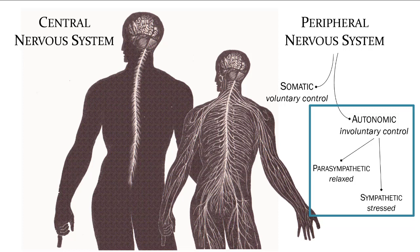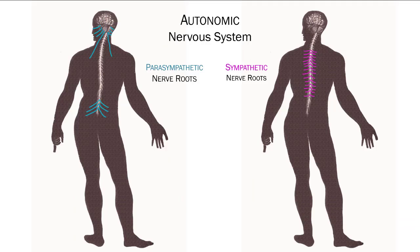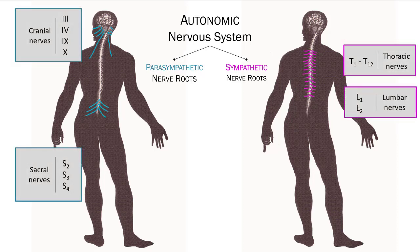We will be covering these two portions of the autonomic nervous system now. The nerve roots and pathways for the parasympathetic and sympathetic nervous systems are different from each other, although both systems innervate most of the same tissues. Thus, most of our tissues and organs are dual innervated, meaning they contain receptors for both the parasympathetic and sympathetic nervous systems and can respond to either. For example, the heart responds to the parasympathetic nervous system by slowing the heart rate down during times of relaxation, while sympathetic nervous system activation will drastically increase heart rate.